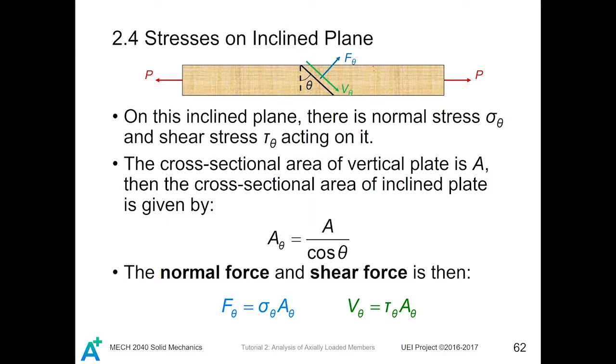The cross-sectional area of the vertical cross-section is A. So, for the inclined surface, the cross-sectional area is given by A divided by cosine theta. The normal force and shear force acting on this inclined surface will be F theta equals the normal stress times the area, while the shear force is given by the shear stress times the area.